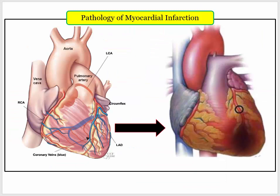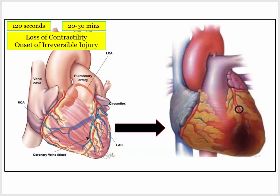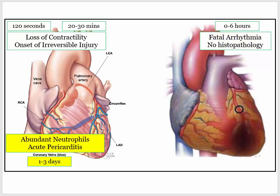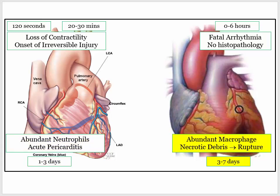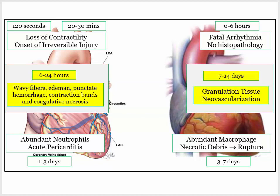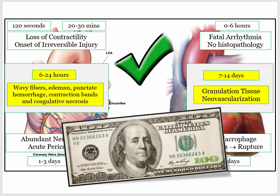We went from normal myocardium to infarction and back again. To summarize: know the time frame where we lose contractility and observe onset of irreversible injury. Be familiar with the initial complication of fatal cardiac arrhythmia. Know the neutrophilic phase for timing MI and the complication of acute pericarditis. The macrophage phase — typically presented as day five post-MI — gives rise to LV or papillary muscle rupture. Greater than 30 days brings the fibroblast phase with type 1 collagen, LV aneurysm with mural thrombosis, and autoimmune pericarditis. This was major high-yield cardiology material with lots of clinical pathologic correlations.